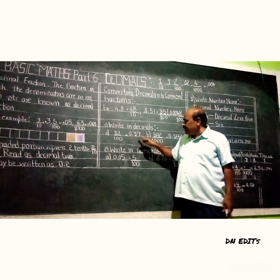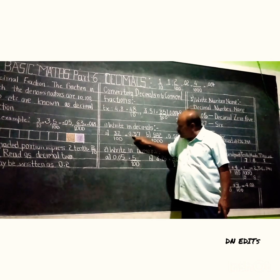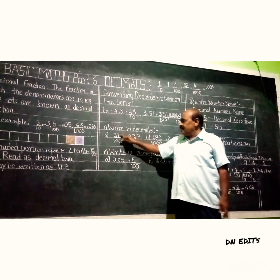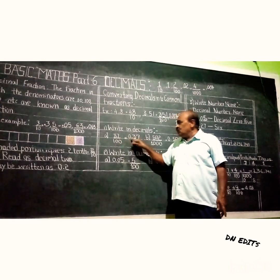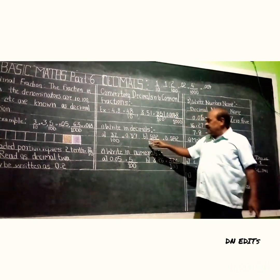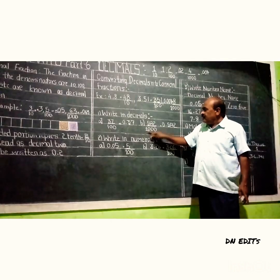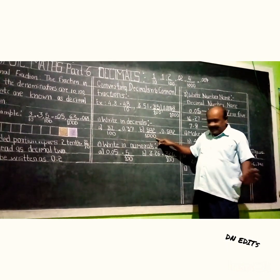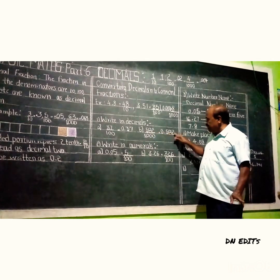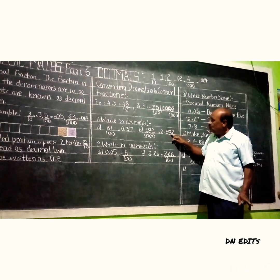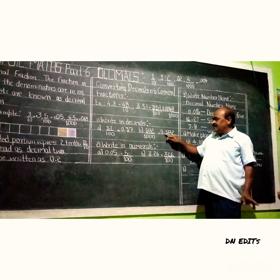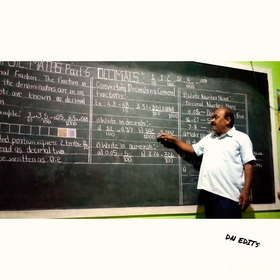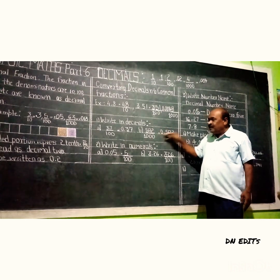From the back, put the decimal — that gives 0.37. Next, B: 582 divided by 1000. Here, 1 is followed by how many zeros? Three zeros. Write 582 first, then count back one, two, three and put the decimal. It becomes 0.582. This is the conversion of fraction into decimal.